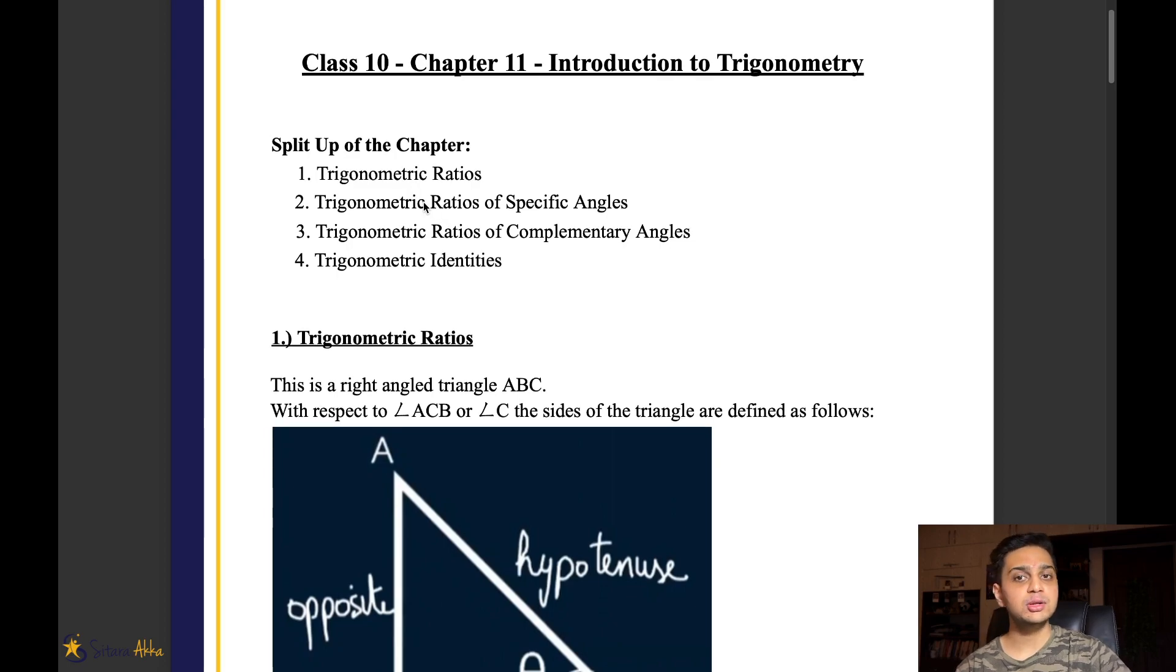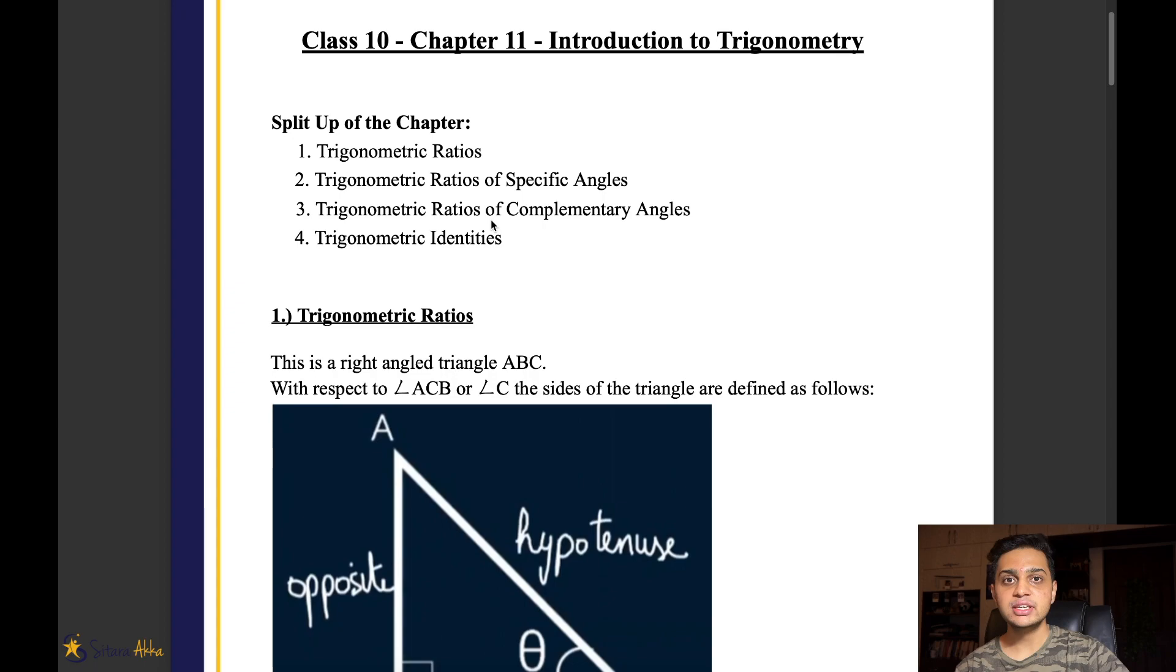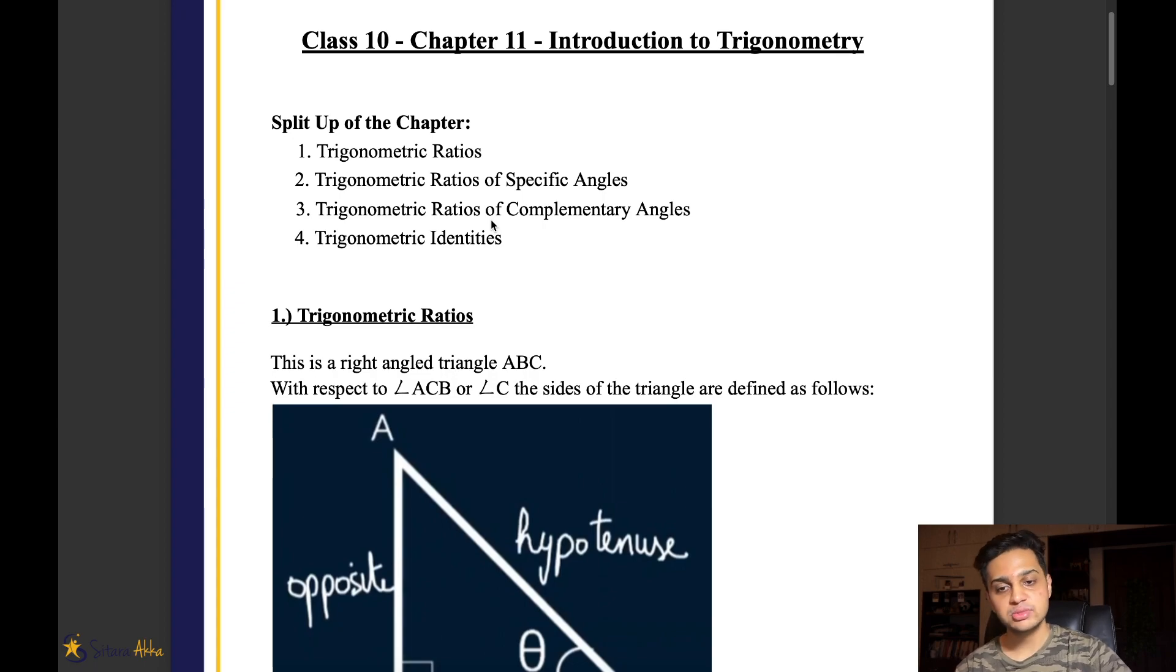In the Trigonometry chapter, we have four important parts: the Trigonometric ratio, then the Trigonometric ratios of specific angles, complementary angles of Trigonometric ratios, and lastly, these identities we will use to solve problems.